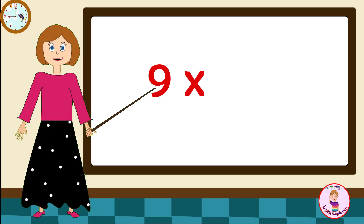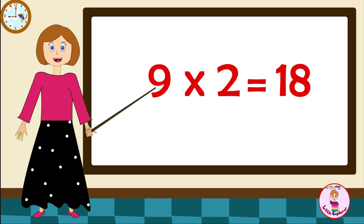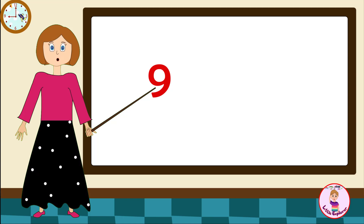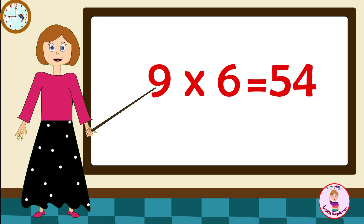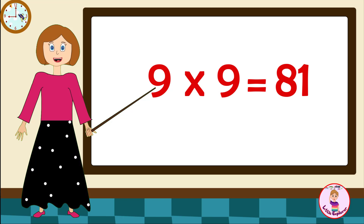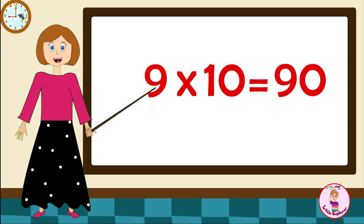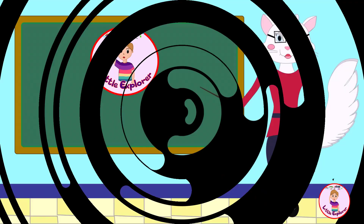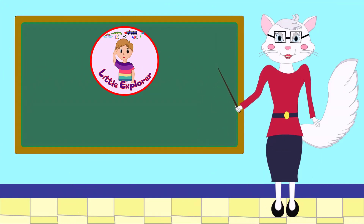Let's revise it one more time. Come on! 9 ones are 9, 9 twos are 18, 9 threes are 27, 9 fours are 36, 9 fives are 45, 9 sixes are 54, 9 sevens are 63, 9 eights are 72, 9 nines are 81, 9 tens are 90.